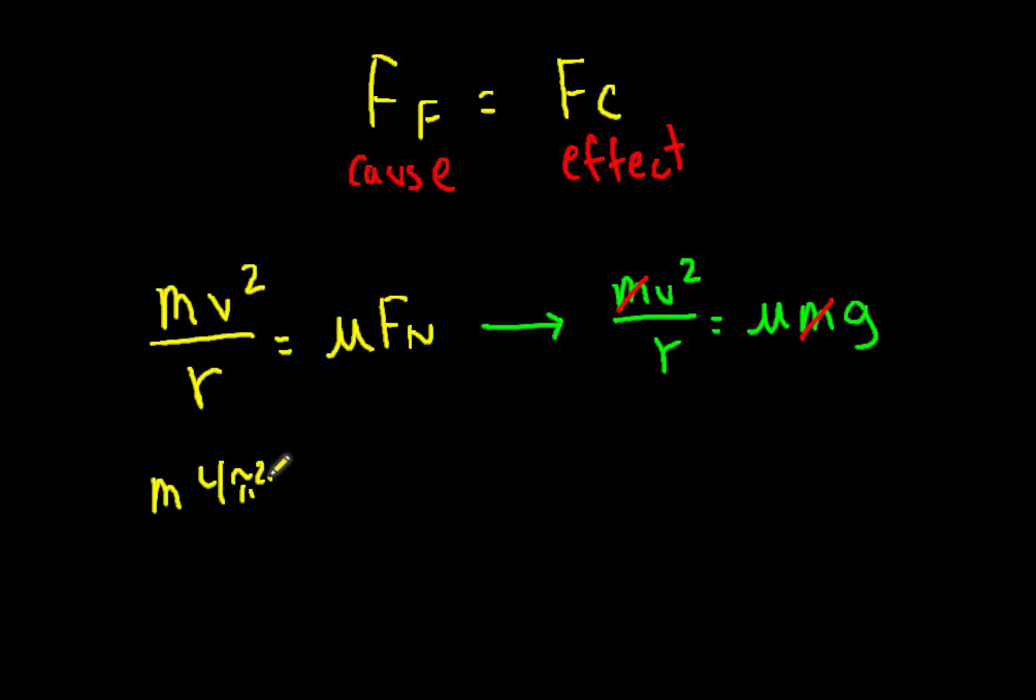We could also look at the other circular motion formula which is m times 4π²r over t equals μmg and again mass appears on both sides so we can cancel it out.